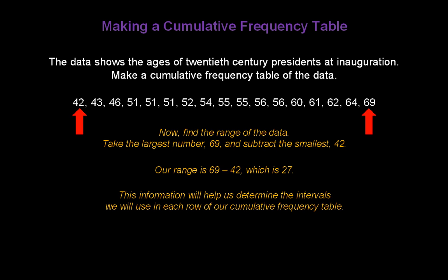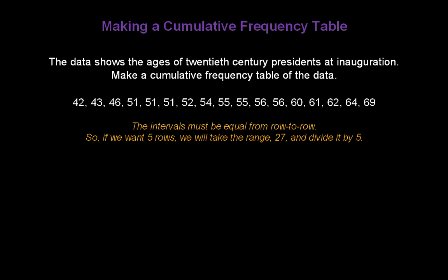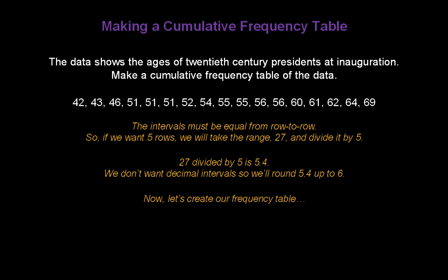Now this information is going to help us determine what intervals we're going to use in each row of our cumulative frequency table. The intervals must be equal from row to row. So if we want five rows, and the range is 27, we take 27 and divide it by 5. 27 divided by 5 is 5.4. Now we don't want decimal intervals, so we'll round 5.4 up to 6. Now, remember that number 6, because we're going to need it to create our frequency table.